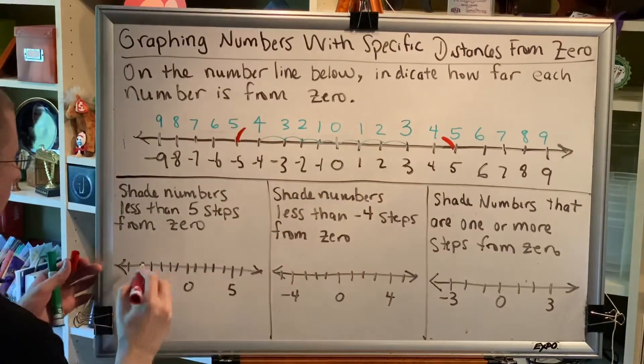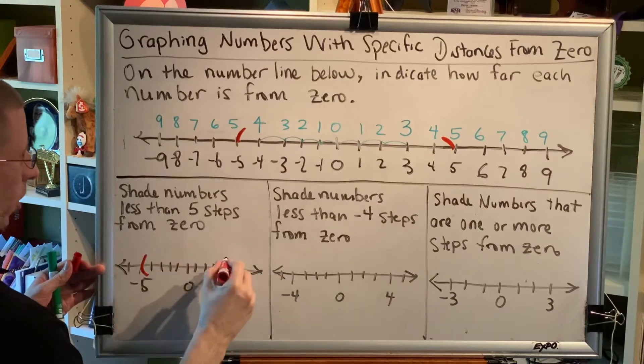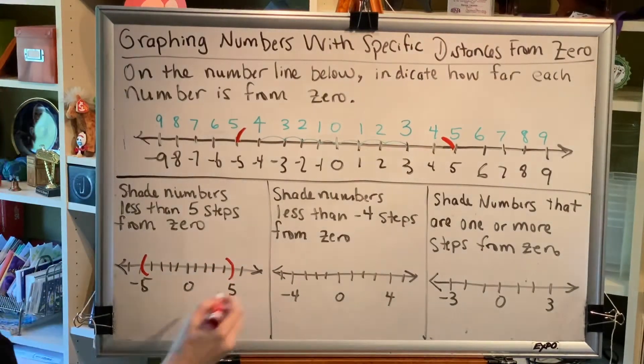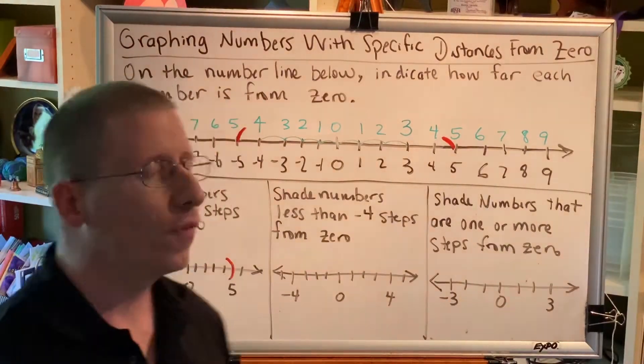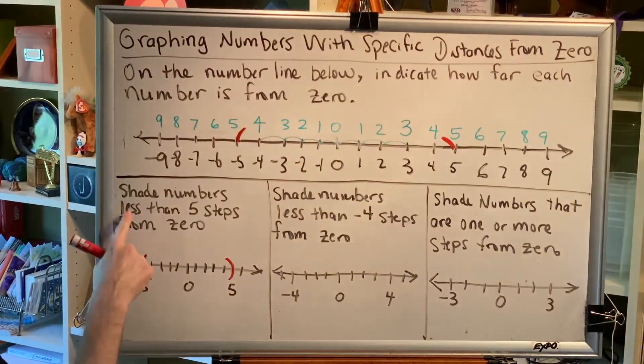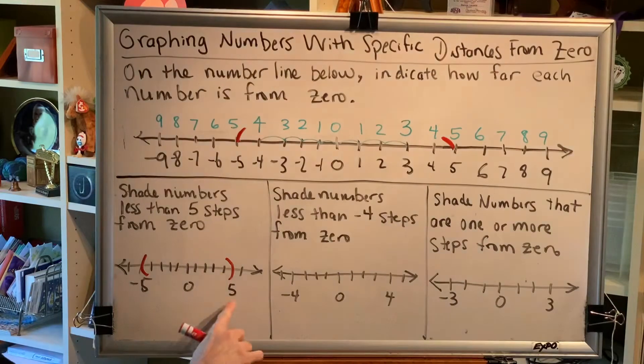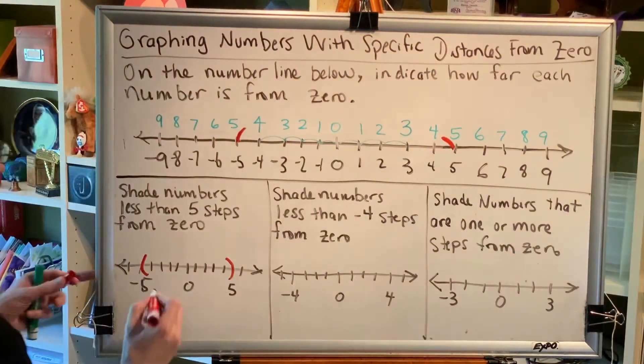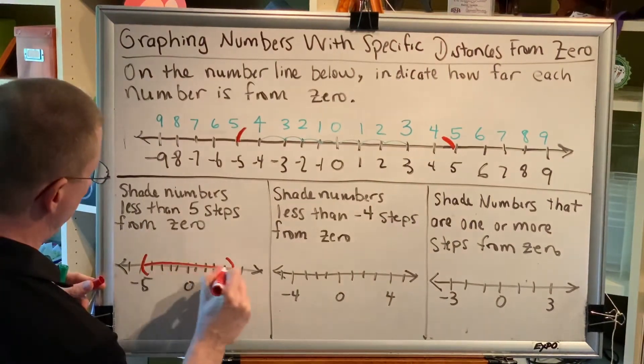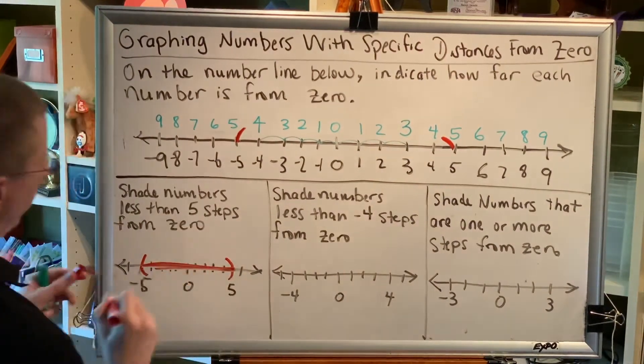Anything from negative 5 to 5. And we're going to use parenthesis at each end because we're not including 5 and negative 5 themselves. We want the numbers that are less than 5 steps from zero. And 5 is exactly 5 steps from zero, so we cannot include it. Alright, so shading the numbers, our answer would look like this.